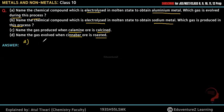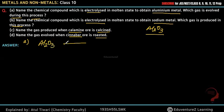Our first question: if electrolysis is to be done for aluminum, the compound used is Al₂O₃ (alumina), which is taken in molten state. When electric current is passed through it in molten state, it breaks into 2Al³⁺ and 3O²⁻ ions.